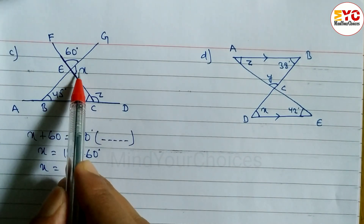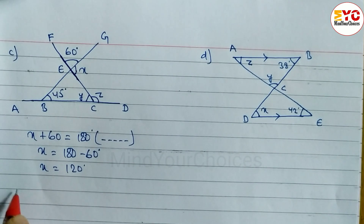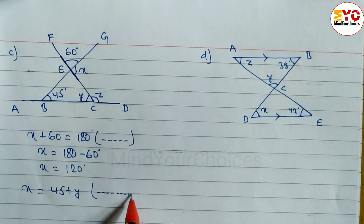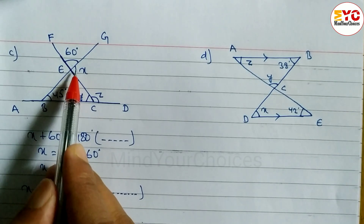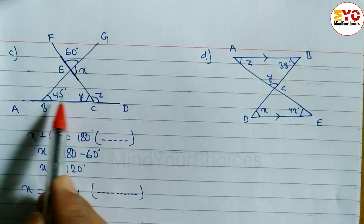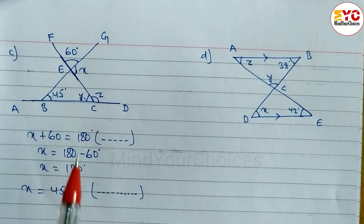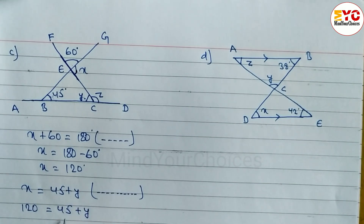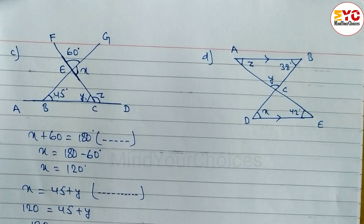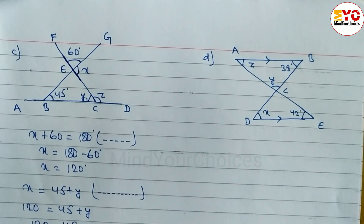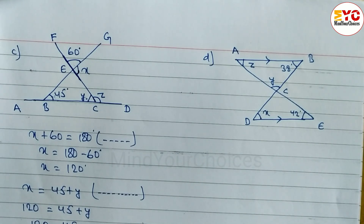Now let's find out the value of y. X is equal to 45 plus y — reason: the exterior angle is equal to the sum of the two opposite interior angles of the triangle. So 120 is equal to 45 plus y. Taking 45 to the right side: y is equal to 120 minus 45, so y is equal to 75 degrees.